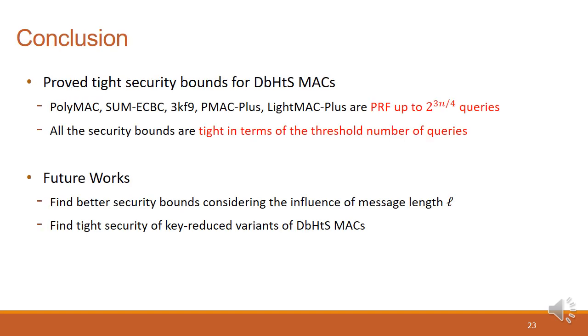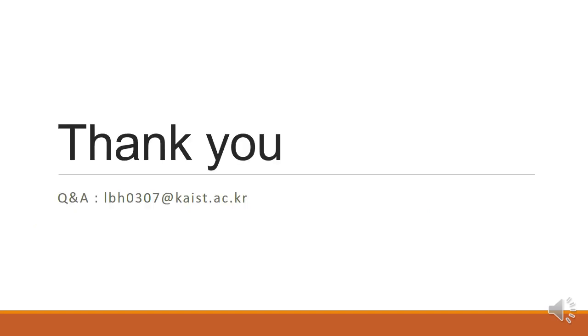For conclusion, we proved the tight security bounds for double block hashed-and-sum MACs, including PMAC, SumECBC, 3KF9, PMAC+, and LightMAC+. All of them are PRF secure up to 2 to the 3N over 4 queries. Also, all the security bounds are tight in terms of the threshold number of queries. And for the future works, it will be interesting to find the better security bounds considering the influence of message length L, especially for PMAC+ and 3KF9, or find the tight security of key-reduced variants of double block hashed-and-sum MACs. Now this is the end of the presentation, and thank you for listening.